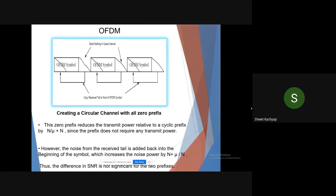Here they are creating a circular channel with an all-zero prefix. This zero prefix reduces the transmit power relative to cyclic prefix by N/(mu plus N) since the prefix does not require any transmitter power. However, the noise from the received prefix is added back in at the beginning of the symbol, which increases the noise power by (N plus mu)/N. Thus, the difference in SNR is not significant for the two prefixes.